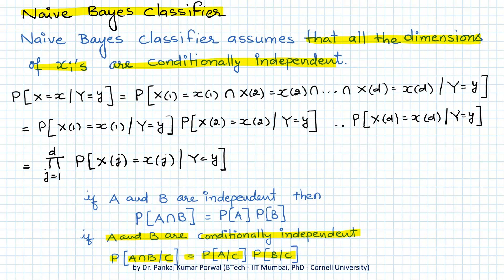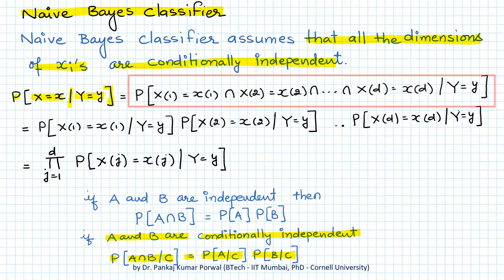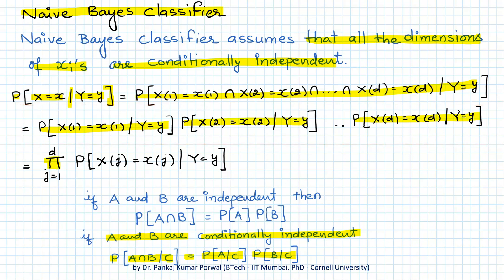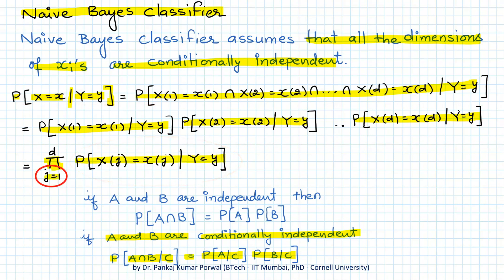So the conditional probability P(X=x | Y=y), which equals this joint expression, can be written as the product of the conditional probabilities for each dimension. This product can be written using the pi notation, where we multiply these expressions for j from 1 to D.